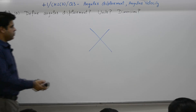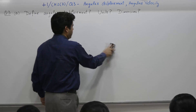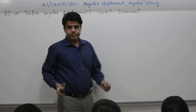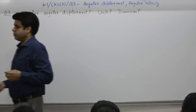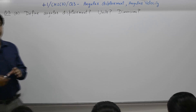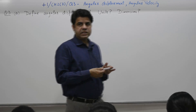The second part of chapter D deals with angular displacement theta, angular velocity omega, and angular acceleration.